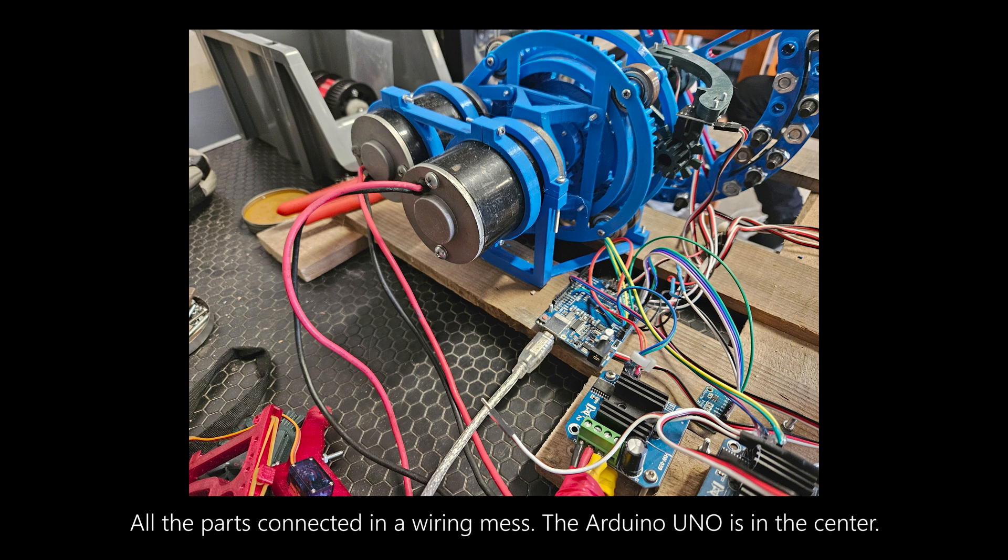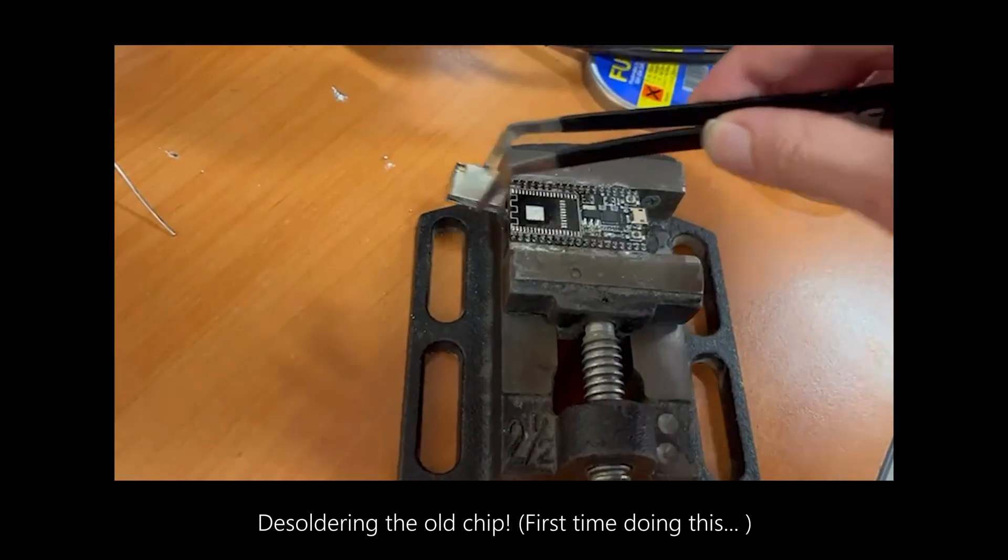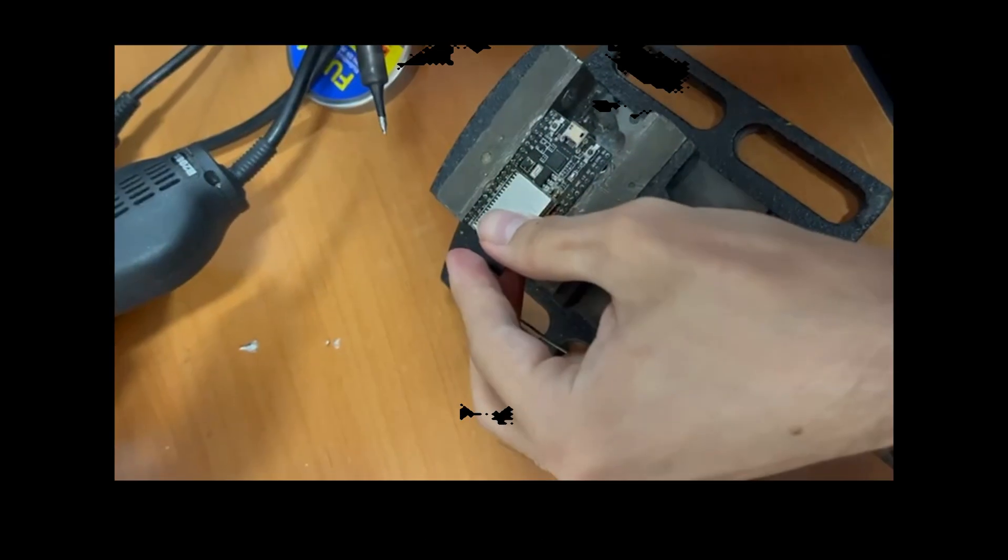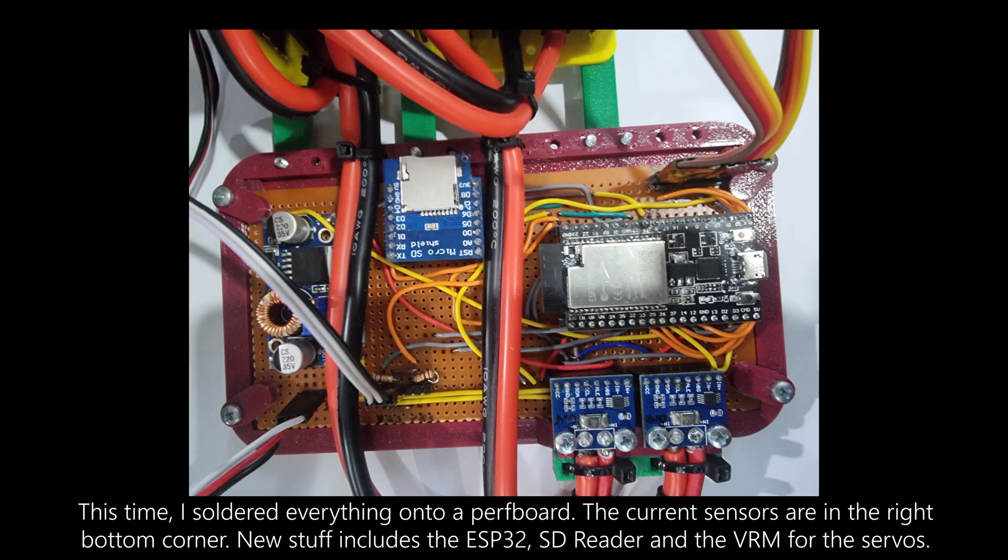In the second version, I switched the Arduino to an ESP32 board with extra RAM, which I soldered onto a development board. I also got some higher end current sensors that could measure the input voltage, while also having 10 times the resolution of the old sensors.